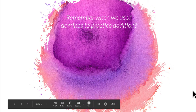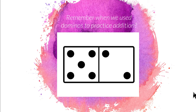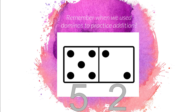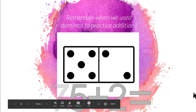Remember when we used dominoes to practice addition? This is a domino. We count the dots on one side — there are five dots on the left and two dots on the right. And when we add them together, adding means we count all of them. That equals seven. Five plus two equals seven.